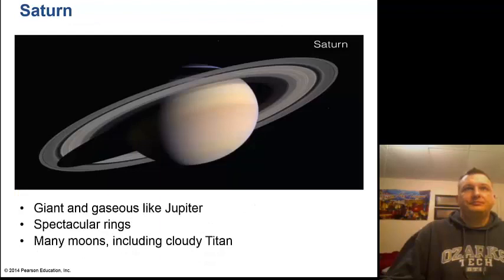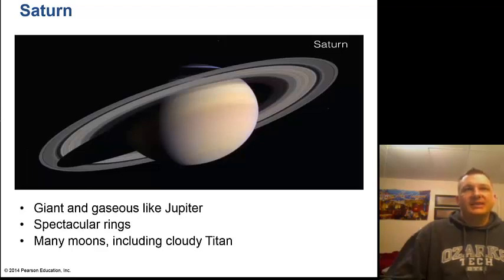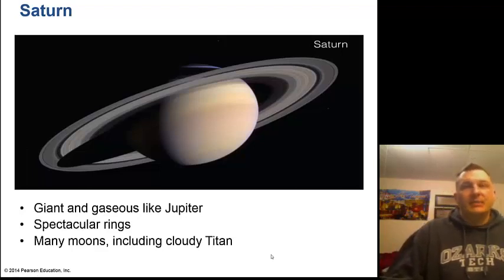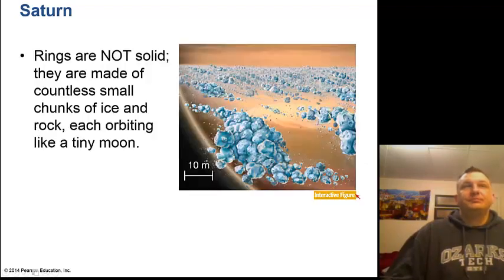Saturn is one of my favorite planets — it's beautiful and looks almost fake through a telescope. Giant and gaseous like Jupiter, it has spectacular rings. The gap visible in the rings is called the Cassini Division, named after Giovanni Cassini who discovered many moons including Titan, which we've actually landed on. The Cassini spacecraft is currently at Saturn. Saturn's rings look solid but are actually made of countless small chunks of ice and rock, each orbiting like a tiny moon.